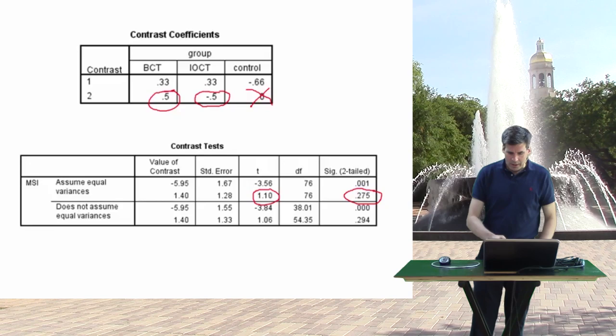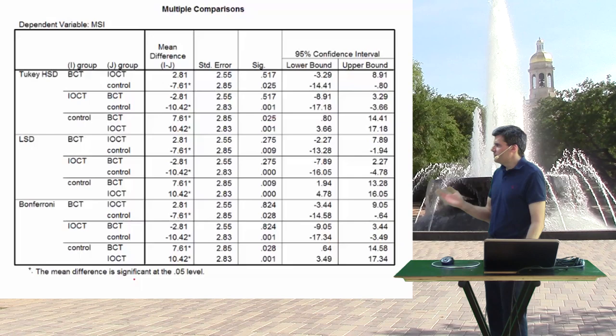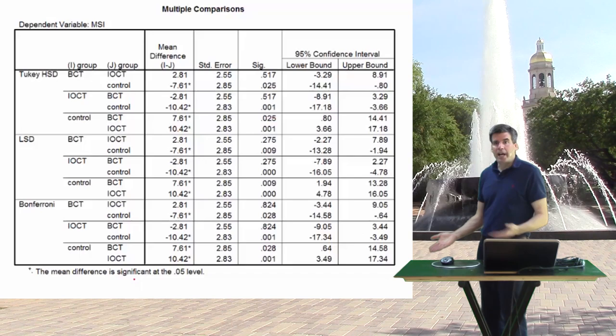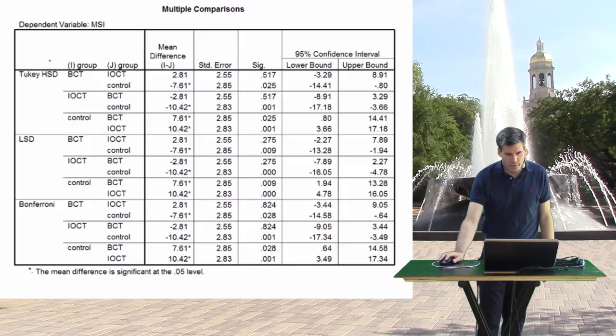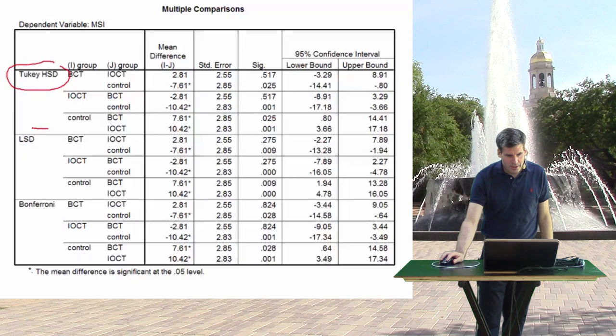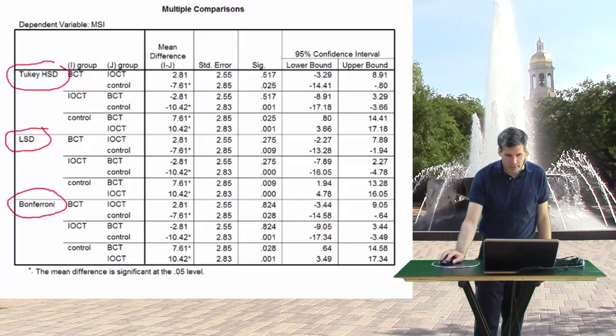So that's the output for the orthogonal contrast — the planned comparisons. Now let's look at the output for post hoc analyses. For this, I asked SPSS to print three different types of post hoc analyses: the Tukey HSD (Tukey Honest Significant Difference test), the LSD (Fisher's Least Significant Difference test), and the Bonferroni test — all three are reported in this table.